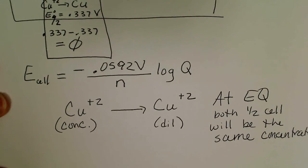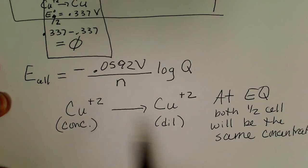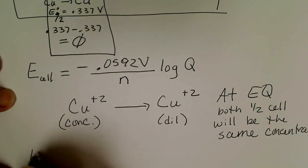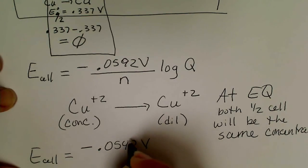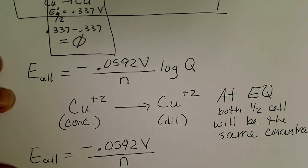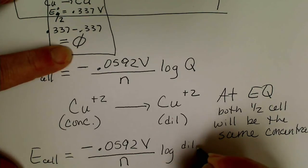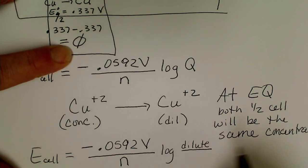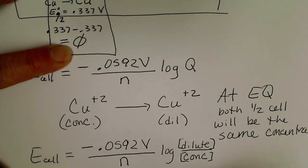We can simplify the Nernst equation for a concentration cell — a galvanic cell made of the same metal in solution but at different concentrations. The equation becomes: E-cell equals negative 0.0592 volts divided by n, times the log of the dilute concentration divided by the concentrated concentration. The 0.0592 value comes from combining several constants.